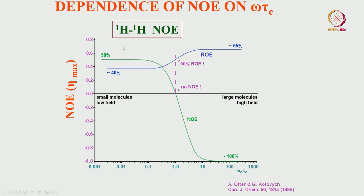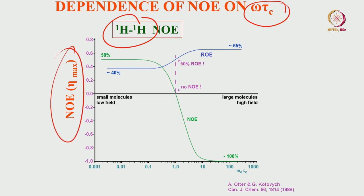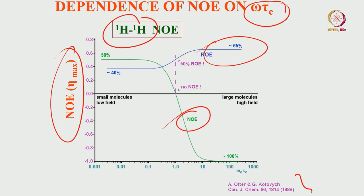If you draw a graph of the homonuclear NOE between protons as a function of ω₀τ_c, the NOE curve appears like this. The NOE is positive at +50 percent in one region; it goes through zero, comes down and becomes minus 100 percent. So the range of NOE enhancement is from plus 50 to minus 100 — that is, it can be half or minus 1. This is the NOE plotted as a function of ω₀τ_c.